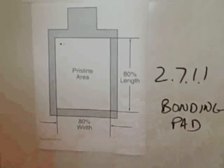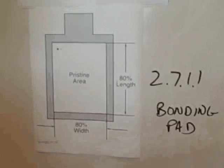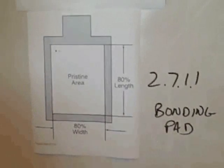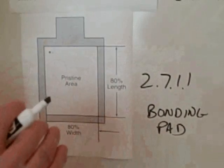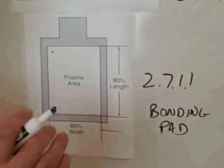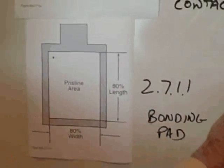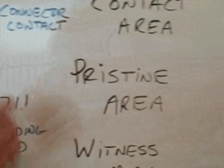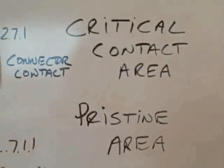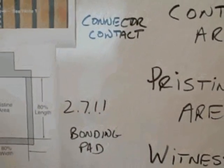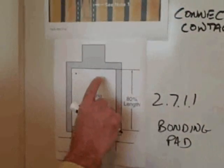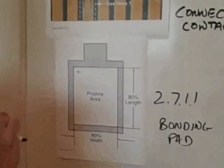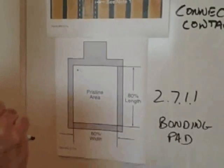My response to the individual with the question was: there really isn't a lot of difference between critical contact area and pristine area, except one is on a connector and one is on a bonding pad. The committee intent is to keep the center portion without major damage.